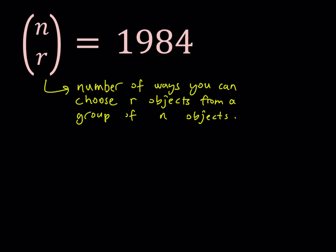Of course, r can equal n, in which case you should have one choice. Or r can be 0, and again, in that case you would have one way to do it because you would be choosing nothing.